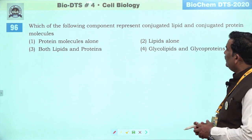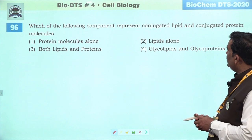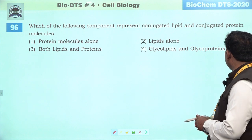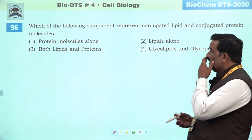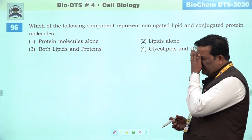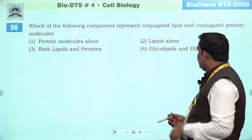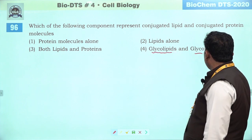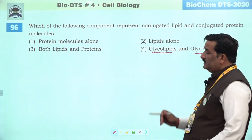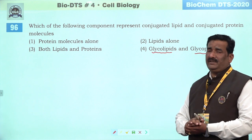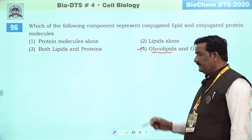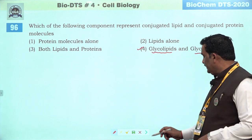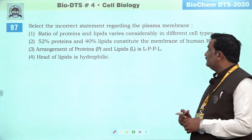Next question: which of the following components represent conjugated lipid and conjugated protein. Koi bahut badi information nahi hai — glycolipid and glycoprotein is the conjugated protein. Fourth is the right answer — NCRT based hai.